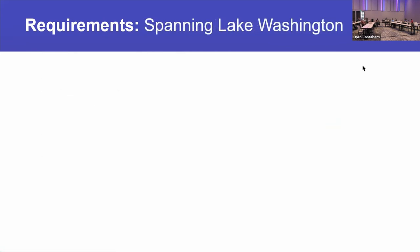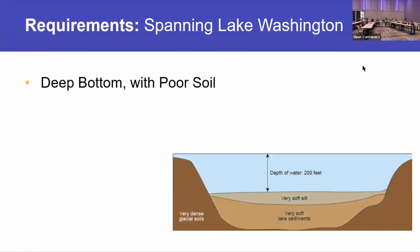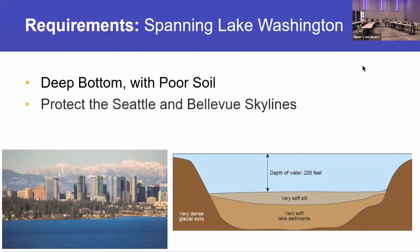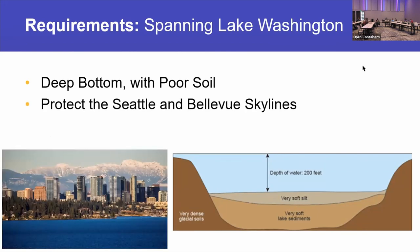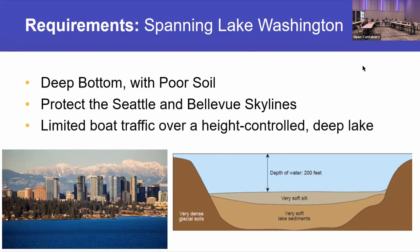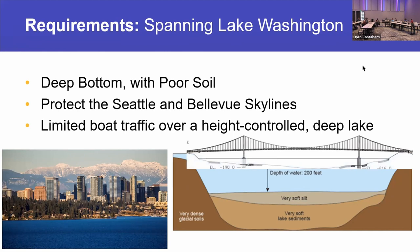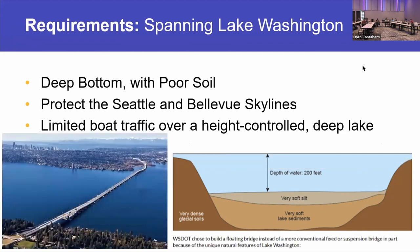Lake Washington is an interesting one — really deep bottom, poor soil, views to protect, and limited boat traffic with no container ships or cruise ships. A suspension bridge doesn't work well because there's no good place for pilings, and you wouldn't want a suspension bridge blocking the views. So we have a floating bridge. The point is all these are good designs; it depends on the requirements and whether the design is fully fleshed out.